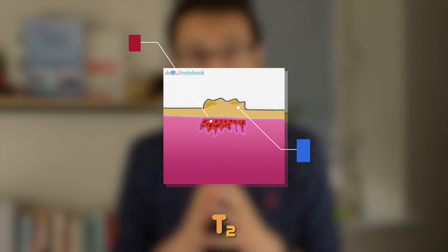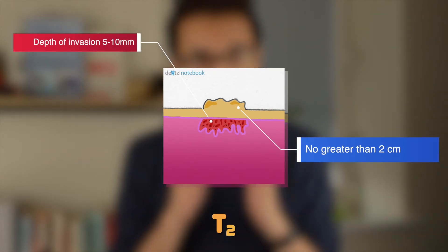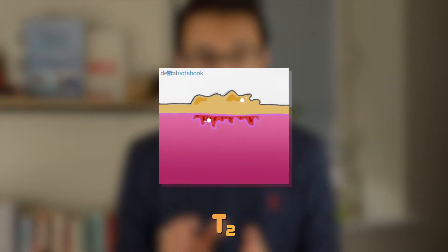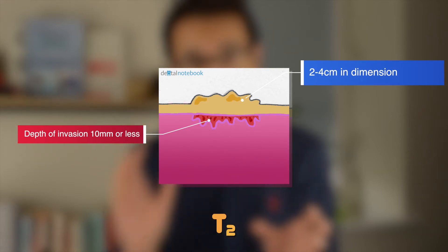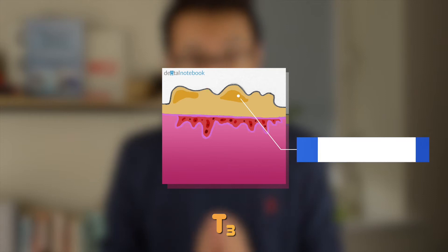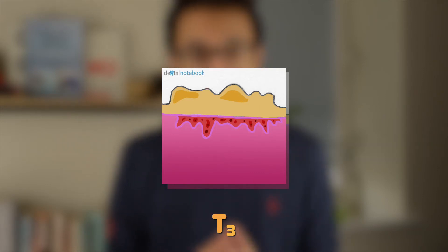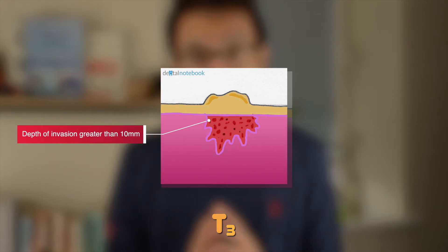We then have T2, where either the tumour is two centimetres or less in its greatest dimension but between five and ten millimetres in depth of invasion, or the tumour is between two and four centimetres in its greatest dimension but the depth of invasion is no greater than ten millimetres. We then have T3, where the tumour is either greater than four centimetres in its greatest dimension, or any tumour that has a depth of invasion greater than ten millimetres.